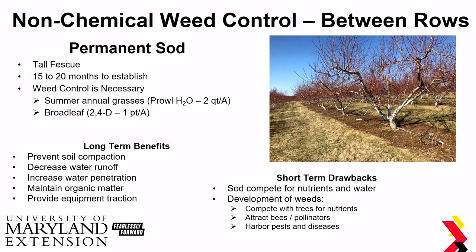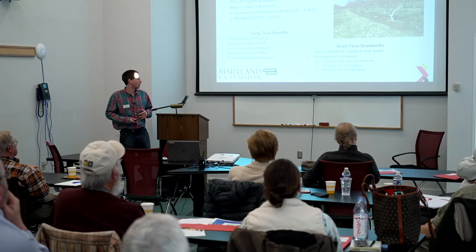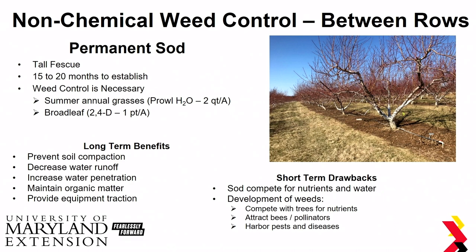Another non-chemical weed control tactic is permanent sod — something like tall fescue. However, this does take a while to establish, and weed control is necessary while establishing it, such as using Prill H2O to control summer annual grasses and 2,4-D to control broadleaf weeds. Long-term benefits include less compaction from not tilling the soil, decreased water runoff, better water penetration, maintained organic matter, and traction for your equipment when wet. Short-term, sod does compete for nutrients and water, and weeds can still develop and harbor pests and diseases.